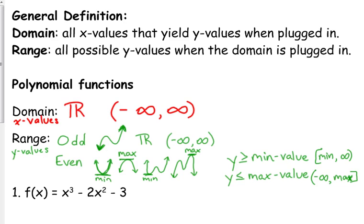Now, depending on the degree, it looks slightly different, but the deal is one end is going to decrease forever, one end is going to increase forever. So your range for an odd polynomial is also all real numbers.